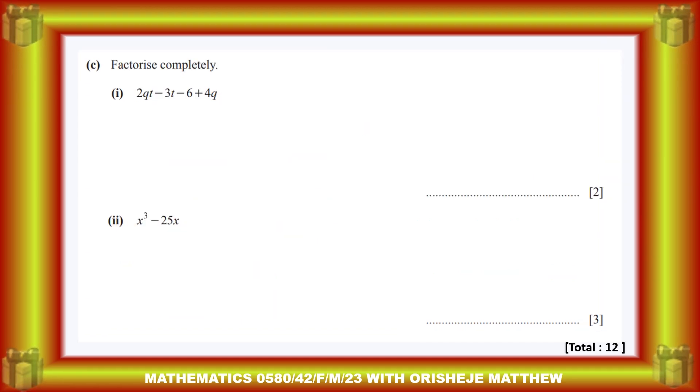Question 5c: factorize completely. So the first one, we have that. Let's introduce brackets—you have the bracket on the right-hand side and the left-hand side. If you introduce that bracket, we have, because we have 2qt - 3t, t is common to both terms, so you can bring it out.